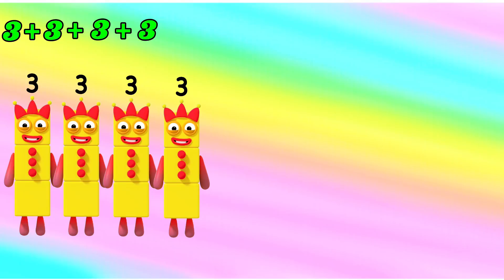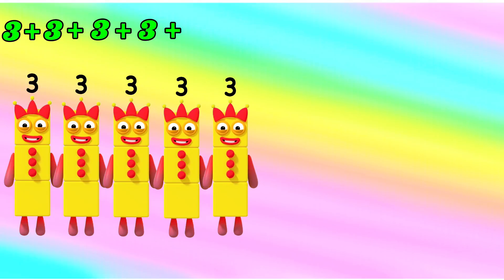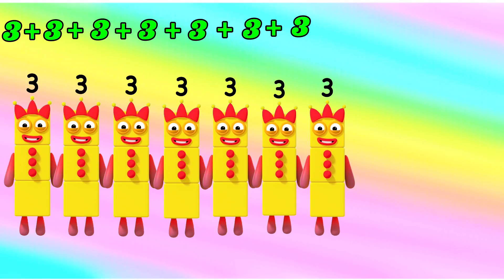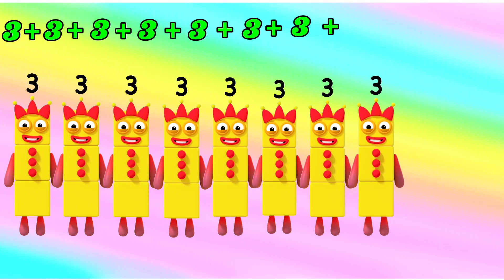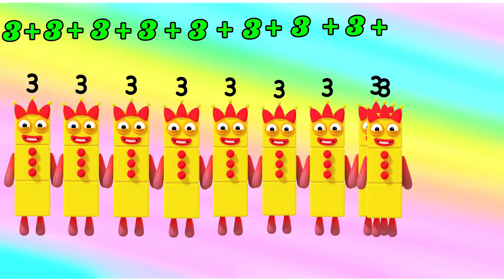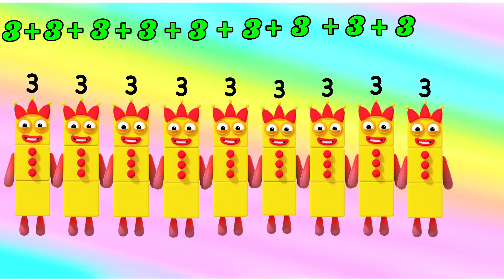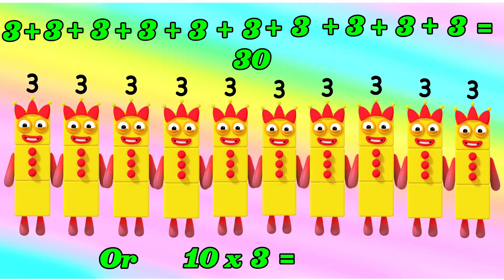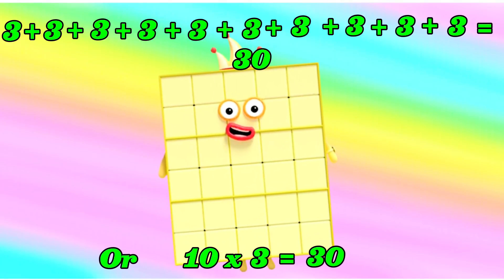Next: 3 plus 3 plus 3 plus 3 plus 3 plus 3 plus 3 plus 3 plus 3 plus 3 is equals to 30. Or, 10 times 3 is equals to 30.